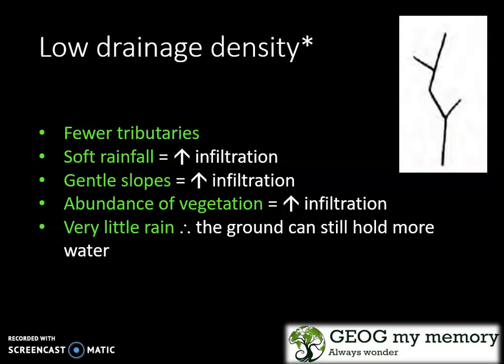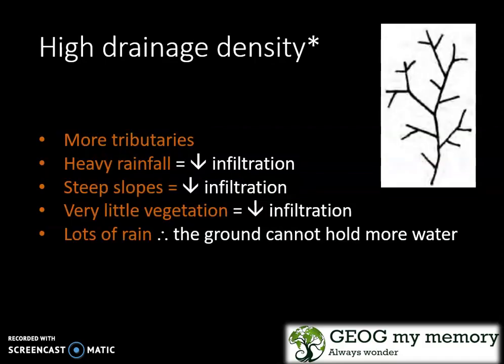Low drainage density describes a river with fewer tributaries. There is soft rainfall, gentle slopes, and an abundance of vegetation, which leads to an increase in infiltration. There's also very little rain, so the ground can still hold more water. High drainage density is the opposite — there are more tributaries, heavy rainfall, steep slopes, and very little vegetation, which decreases infiltration. There's lots of rain and the groundwater cannot hold more water.